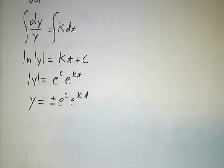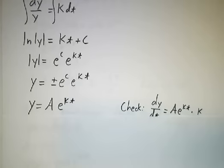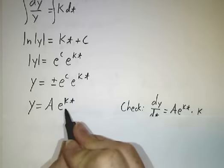And plus or minus e to a constant is just another constant. Let's give it a name. We'll call it A. And I claim that y equals A e to the kt is the solution, and it works no matter what A is. Let's check. What's the derivative of A e to the kt? The A comes along for the ride, and the derivative of e to the kt is e to the kt times the derivative of kt, which is k. So the derivative of y is y times k. It solves a differential equation. We win. So this is a solution.